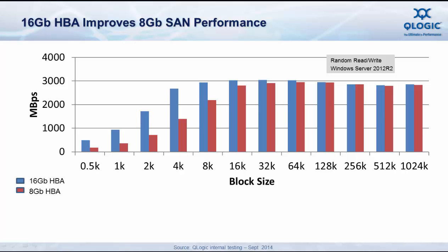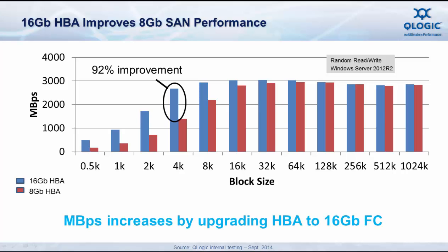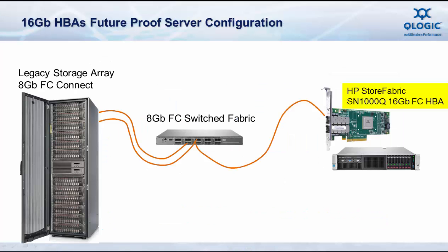These increases are due to the more powerful processors and increased memory within the 16GB Fibre Channel adapter compared to that of an 8GB adapter. So when doing a server upgrade or refresh, consider using 16GB Fibre Channel HPAs to maximize your performance even when connected to legacy SAN and storage environments. In addition to the performance advantages, another advantage of deploying 16GB Fibre Channel HPAs with your server upgrades today is that you're future-proofing those servers for use tomorrow.